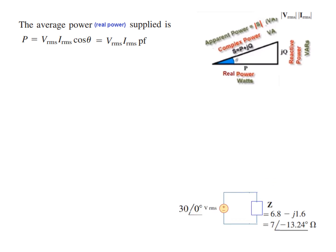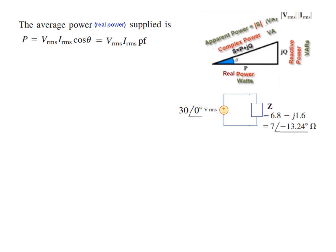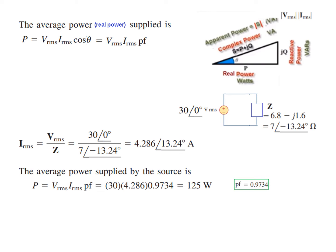Now from the circuit we have the V_rms given, but we don't know I_rms. So we can calculate I_rms from here. So I_rms will be V_rms over Z. Writing the two values and solving, we get I_rms = 4.286∠-13.24° A. Now we'll use this formula. So V_rms times I_rms and power factor—we are only writing the magnitude, not the angle. So 30 and the magnitude of this and then power factor is 0.9734, so the answer will be 125 watts.